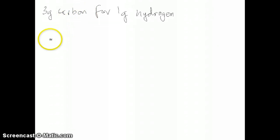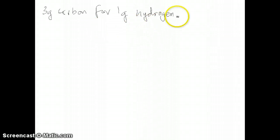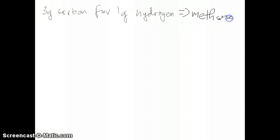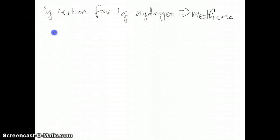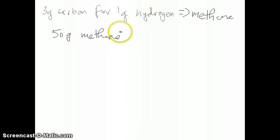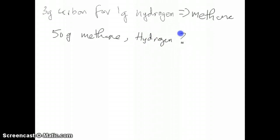The information provided in the problem on the previous slide is that there are 3 grams of carbon for every 1 gram of hydrogen in a sample of methane. What we're being asked to do is calculate the amount of hydrogen in a 50-gram sample of methane — assuming that methane only contains carbon and hydrogen.